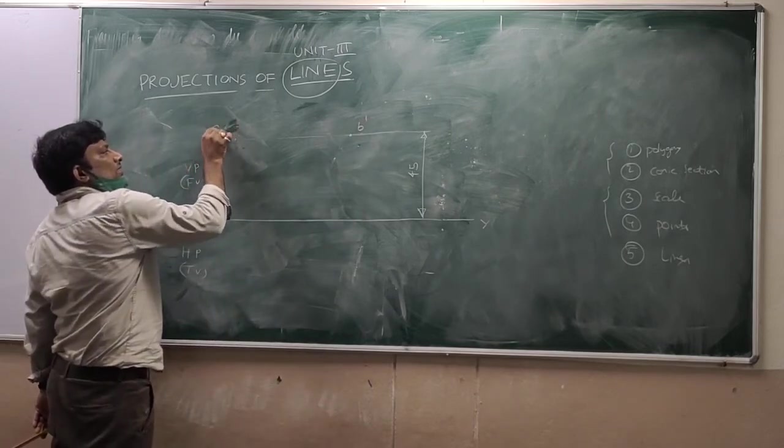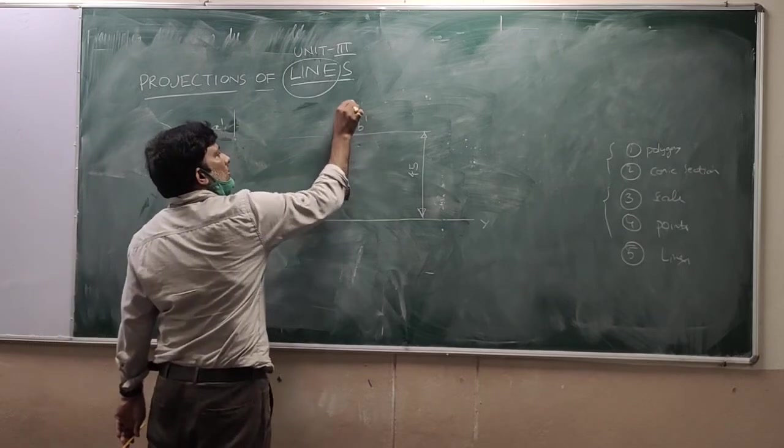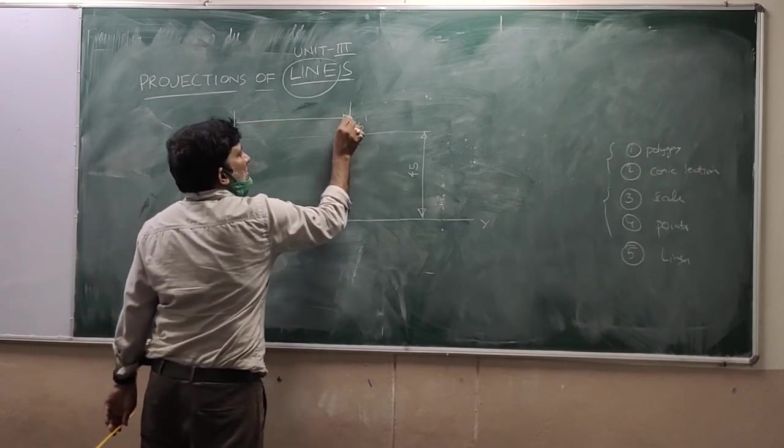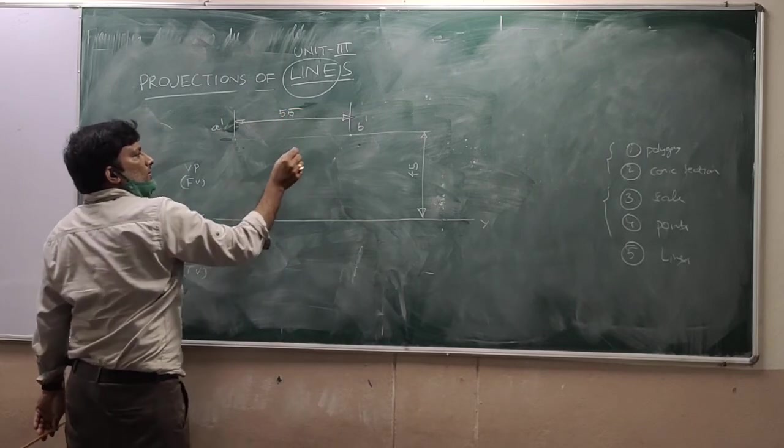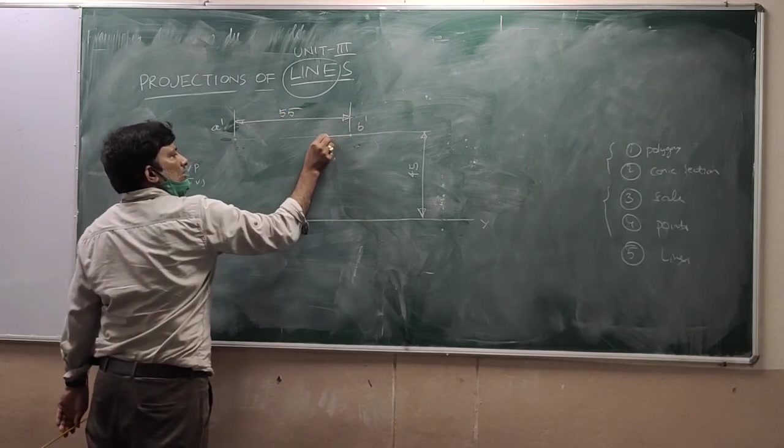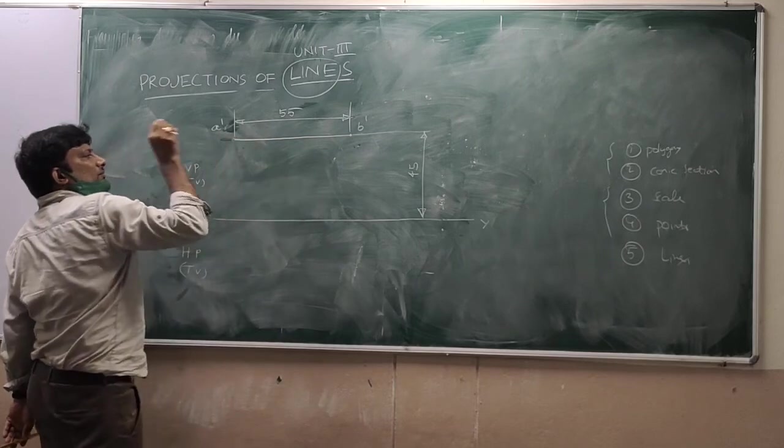See the dimension? I am giving the dimension here. The length of the line is 55mm. What will be the A dash? B dash.